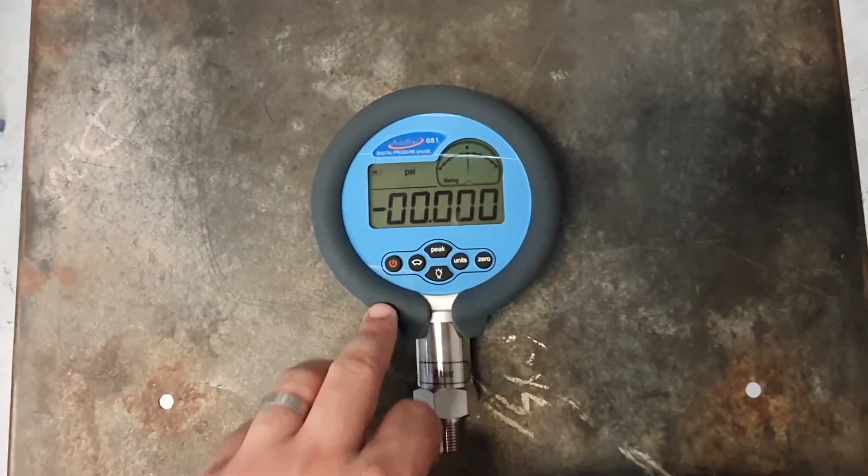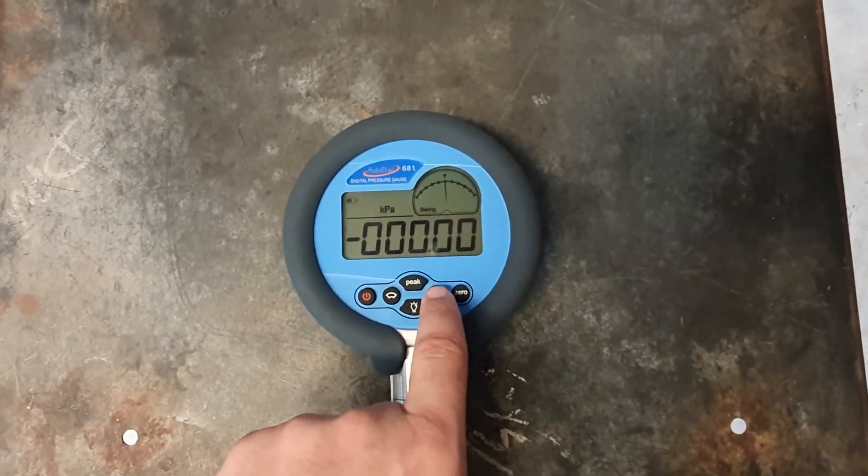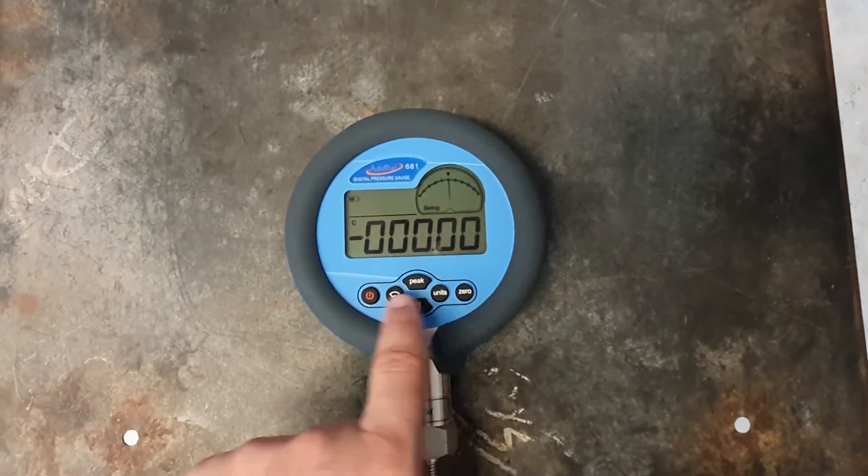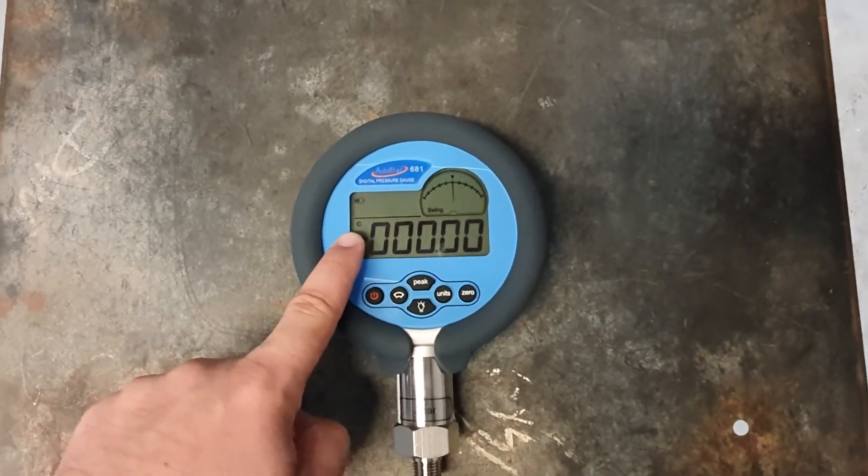Now we're back to the normal reading, and if you want to display that unit, just press units, scroll through the options, and you'll see here one of the options is C, so this is the custom unit. And that's it, the custom unit set.